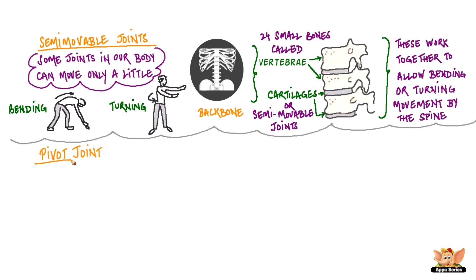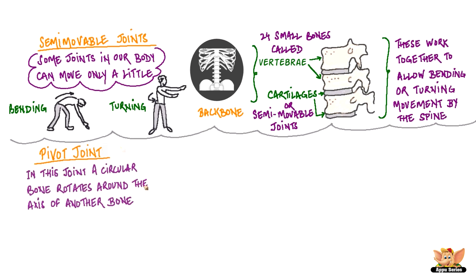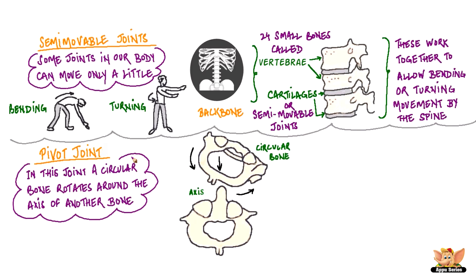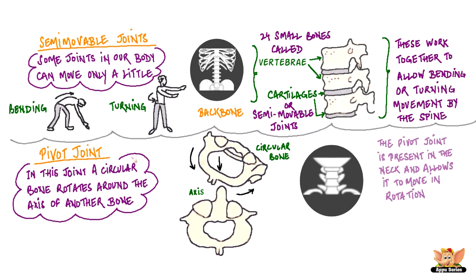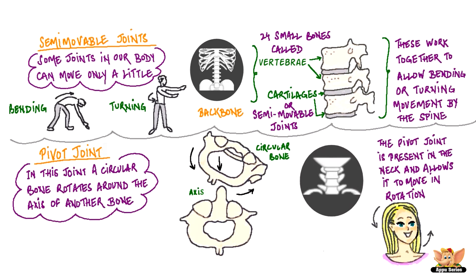Pivot joint: in this joint, a circular bone rotates around the axis of another bone. The pivot joint is present in the neck and allows it to move in rotation.